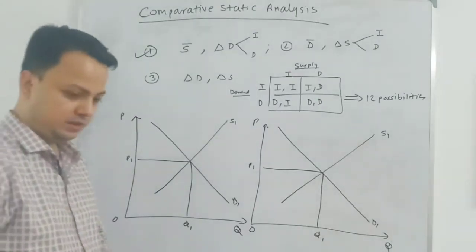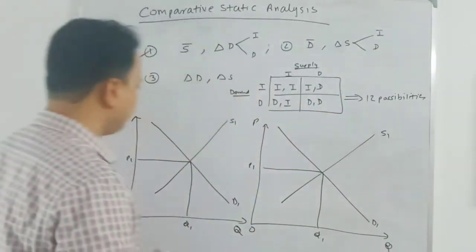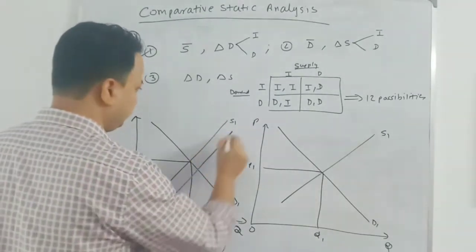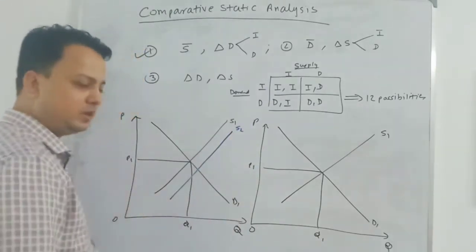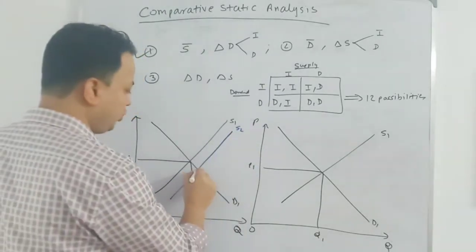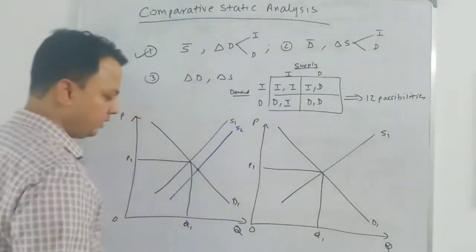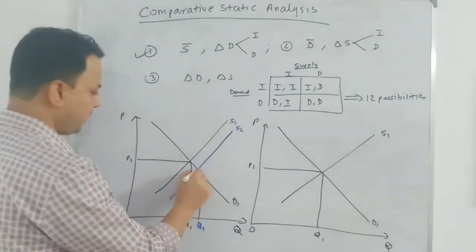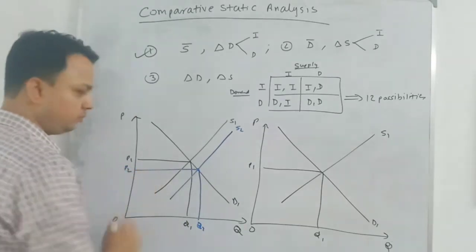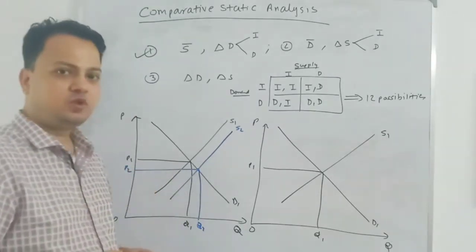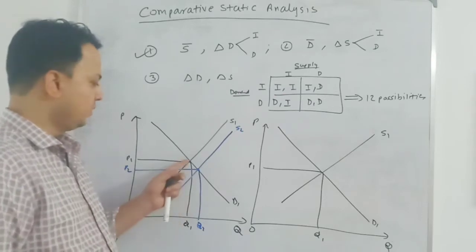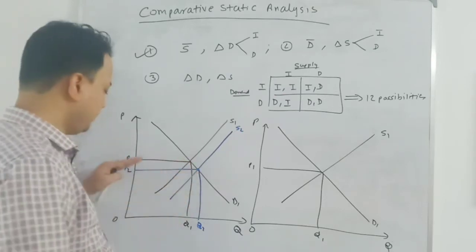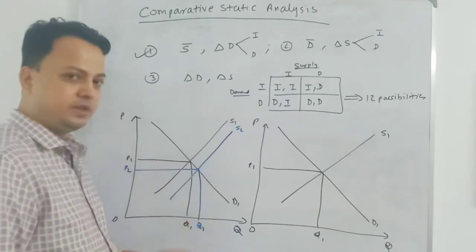Suppose there is an increase in the supply curve. When the supply curve increases it will shift rightward to S2. When supply increases, at the new equilibrium, equilibrium quantity will be higher — Q2 — and price will be lower, P2. So in comparative static analysis, when I compare the old equilibrium with the new equilibrium, price is lower and quantity is higher.